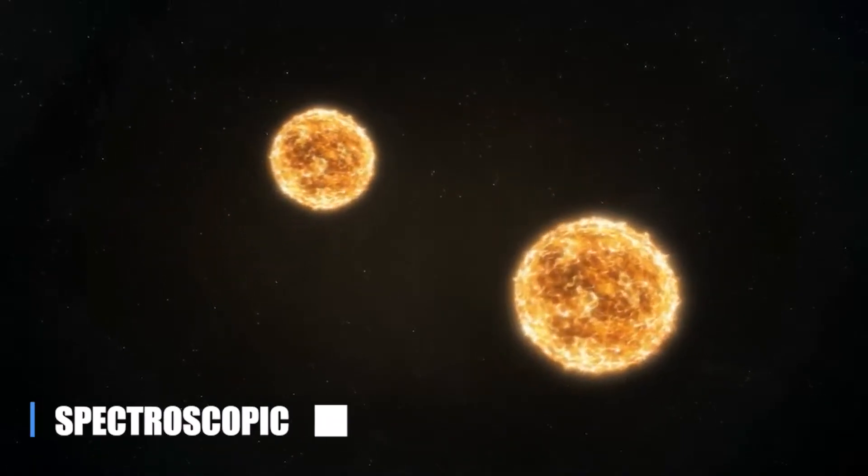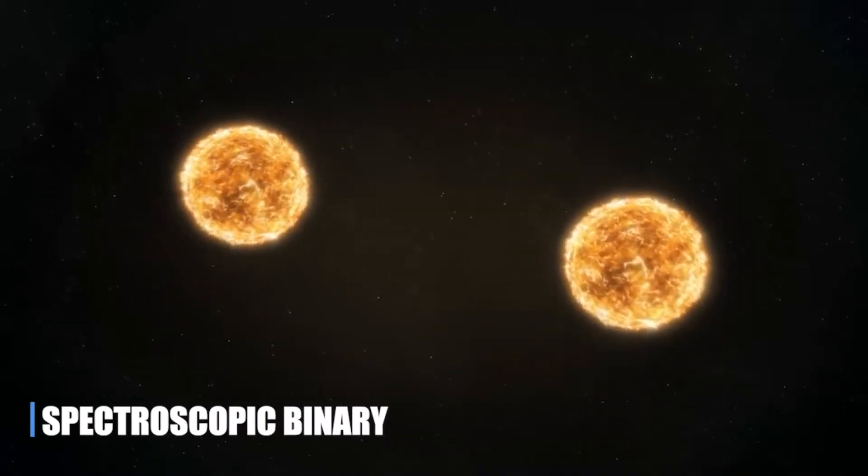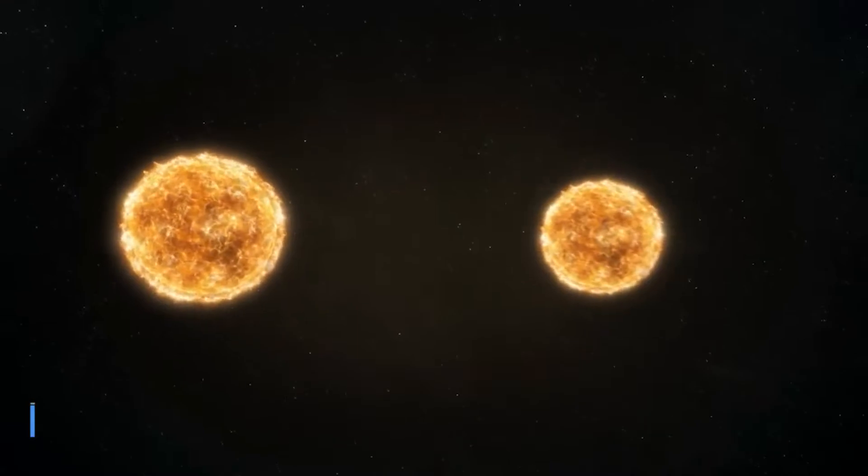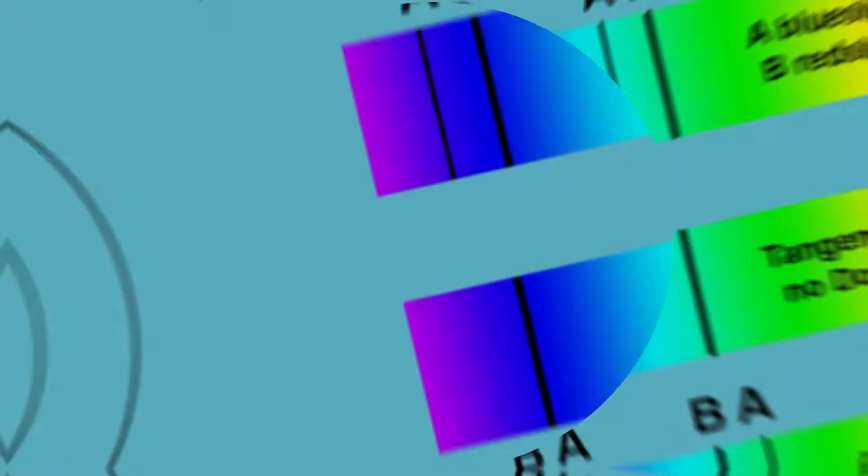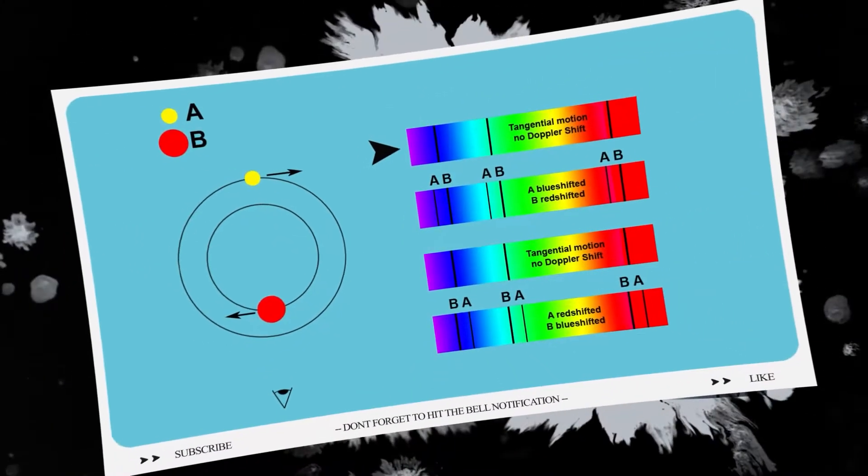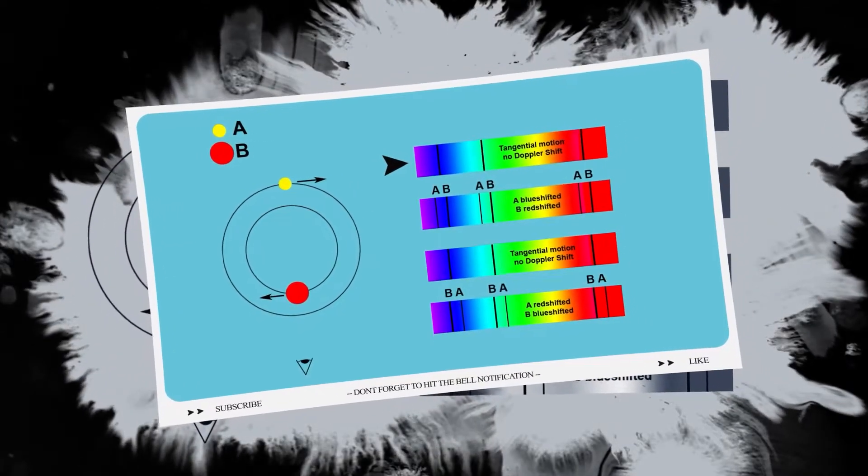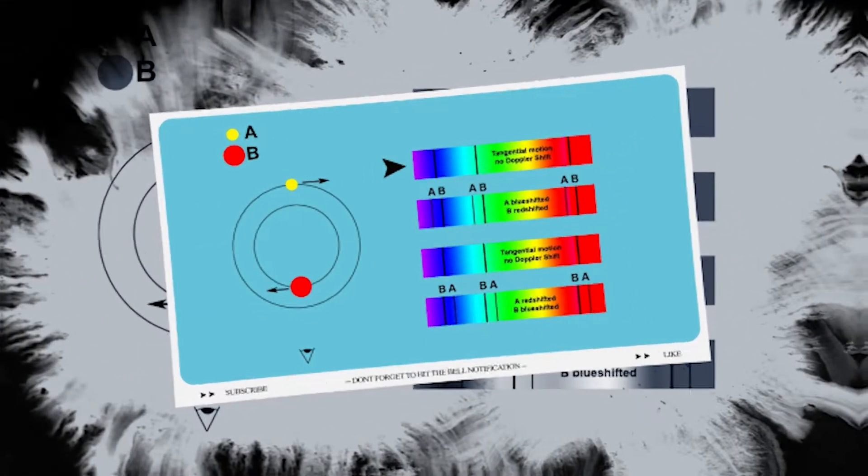Another classification of binary systems is a spectroscopic binary. These appear close to one another even when viewed through a telescope. Scientists must measure the wavelengths of light that the stars emit and determine their binary nature based on the features of these measurements.